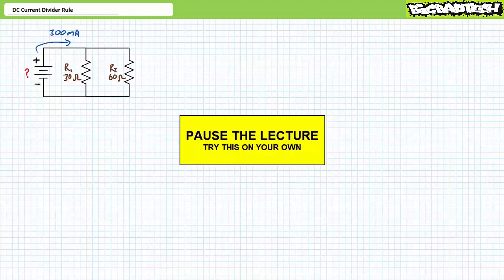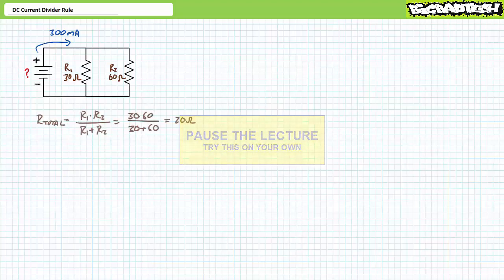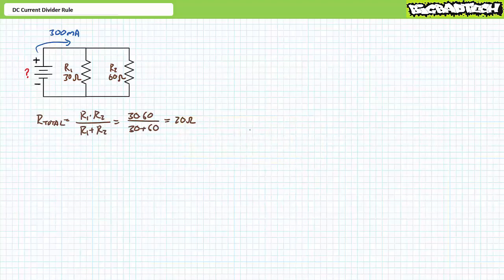If you're tracking, you should have obtained the following results. First, let's perform some simplification of this circuit. The total resistance seen by the source for a parallel combination of a 30 ohm and a 60 ohm resistor is 20 ohms. Supply voltage is equal to source current times total resistance. Substituting our given values demonstrates the supply voltage must establish a 6 volt differential across this parallel circuit.